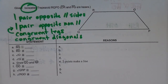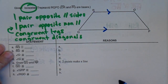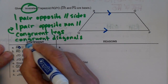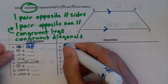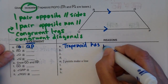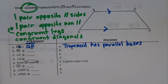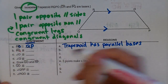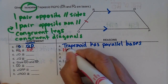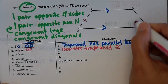So one pair of opposite sides that are parallel — those are your bases. So RO is parallel to QP, and that's because the trapezoid has parallel bases. RQ is congruent to OP because an isosceles trapezoid has congruent legs. And I know it's isosceles — they tell me up there it's isosceles — so that's how I know RQ and OP are congruent.